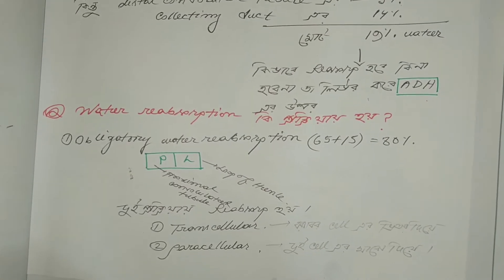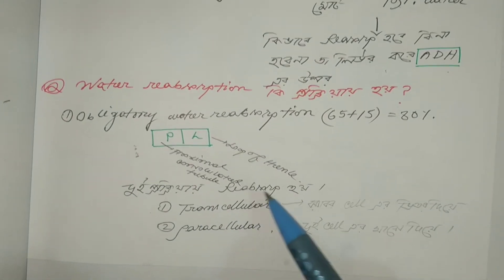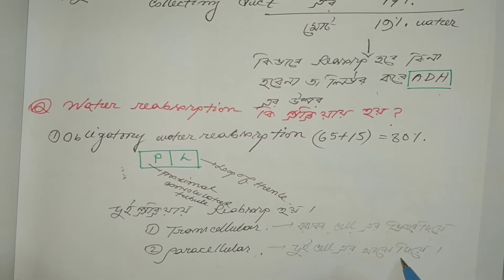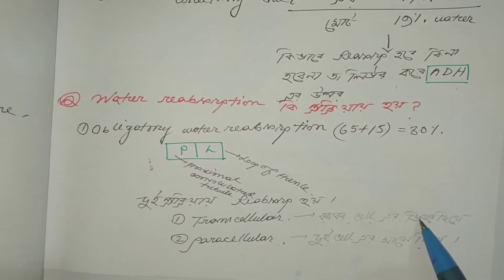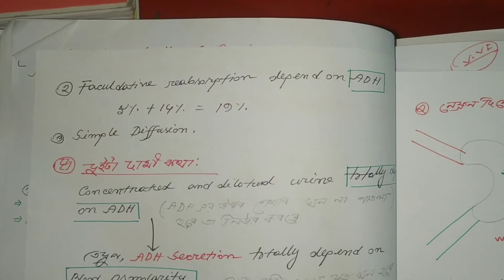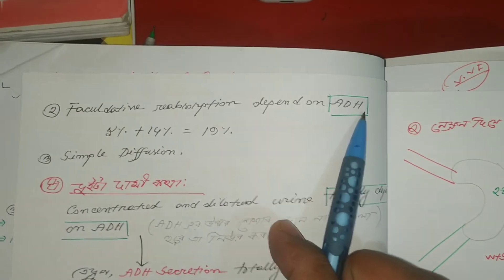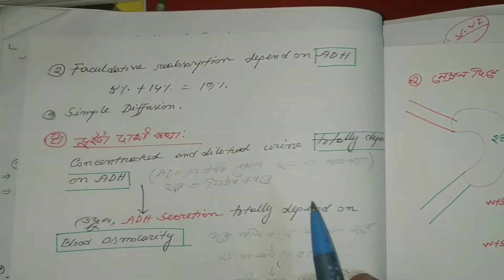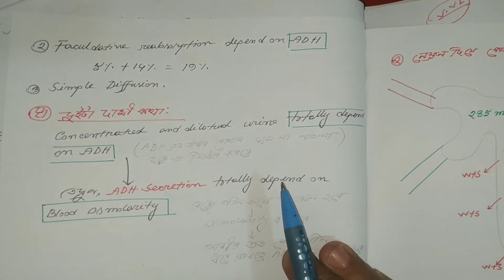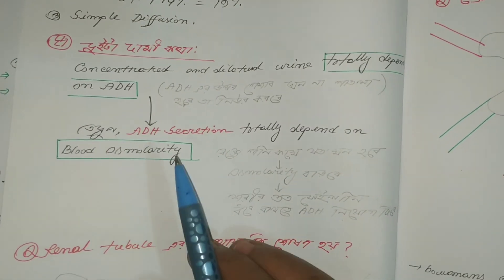There are two pathways for reabsorption: one is the transcellular pathway, and the other is the paracellular pathway. The transcellular pathway totally depends on ADH, and ADH secretion totally depends on blood osmolarity.